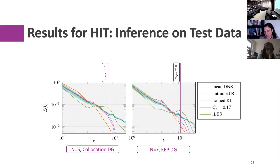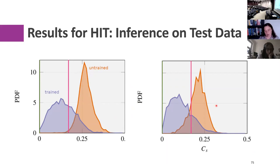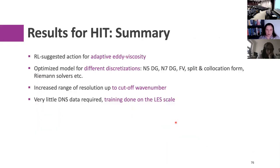Here's what actually happens during training: we can see how the eddy viscosity or Smagorinsky constant distribution evolves from an untrained model to a trained one. For the low-order method and the high-order method, the training behaves as expected — pushing the Cs to a lower range, consistent with physical intuition for DG schemes.